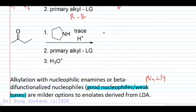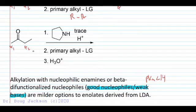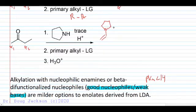Ultimately, the product of the first step is a kinetic enamine. When we have two different alpha positions with an unsymmetrical ketone, it still prefers to form an enamine at the less substituted carbon, just as with the enolate — in general, for the most part.